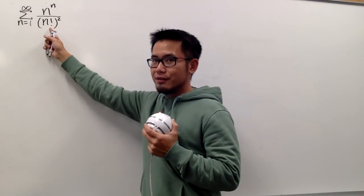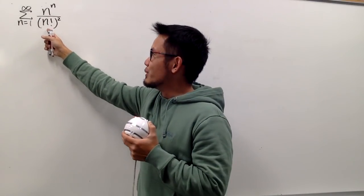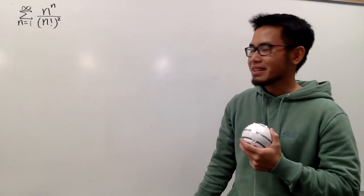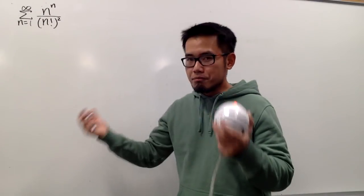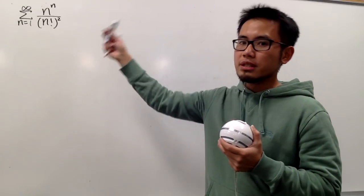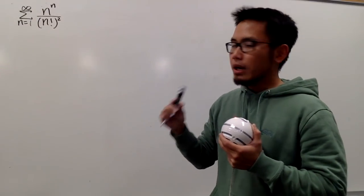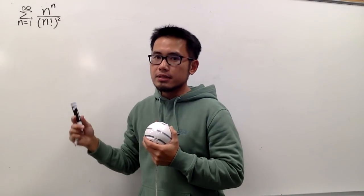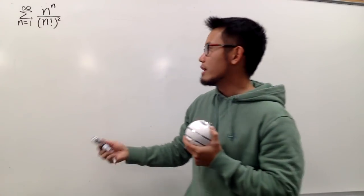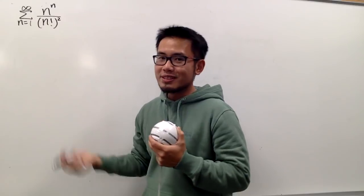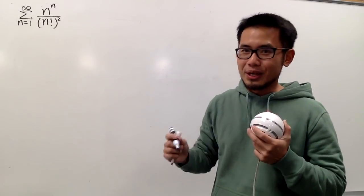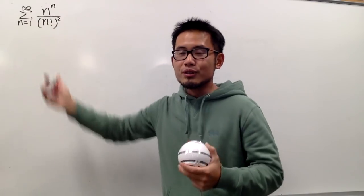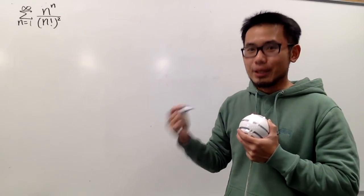But this time the n factorial is not by itself — it's with the second power. Anyway, what can we do to test if this series converges? A hint: if you see n in the exponent, you should use the ratio test. And especially if you also see the factorial, you should definitely try the ratio test. In this case we have both, so let's go ahead and try the ratio test.